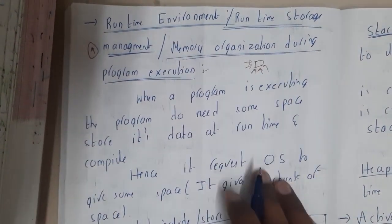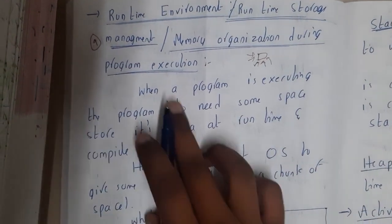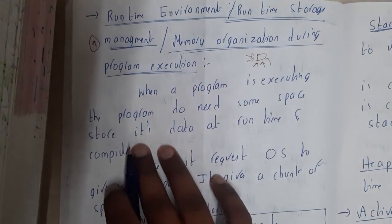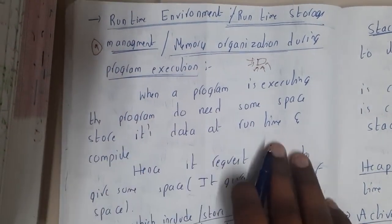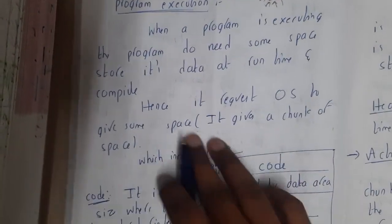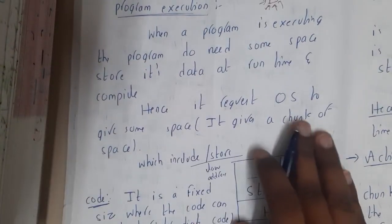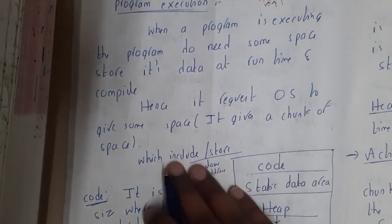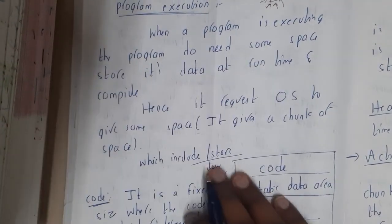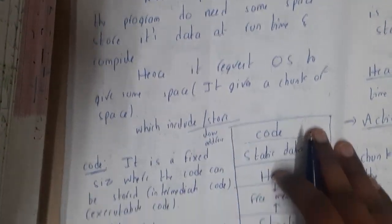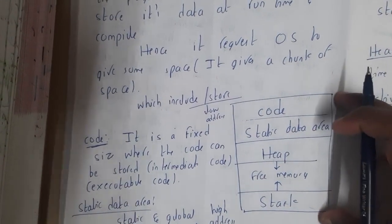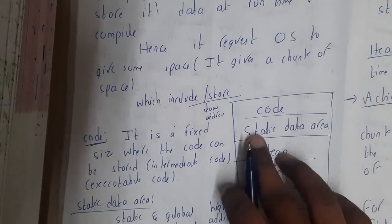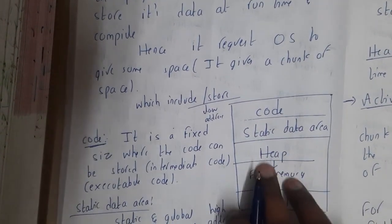When a program is executing, it needs some space to store its data at runtime and compile time. Hence, it requests the OS to give some space. The OS gives a chunk of space which includes — this is the basic structure — a code segment, static data area, heap, free memory, and stack.